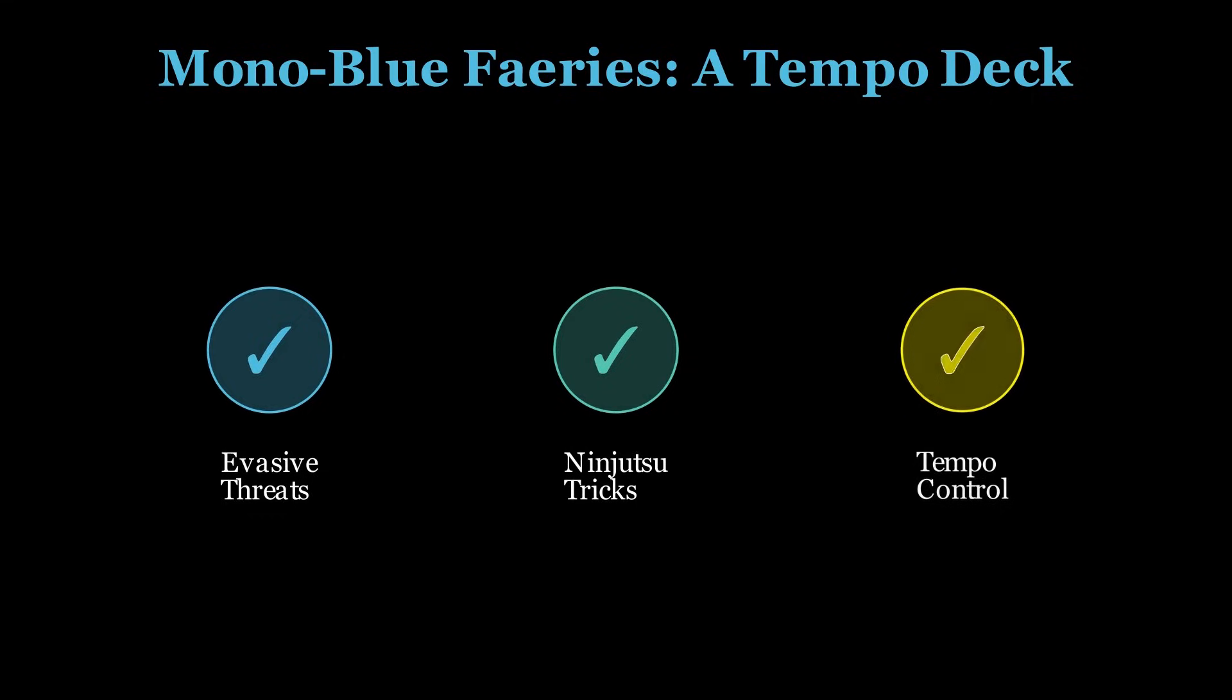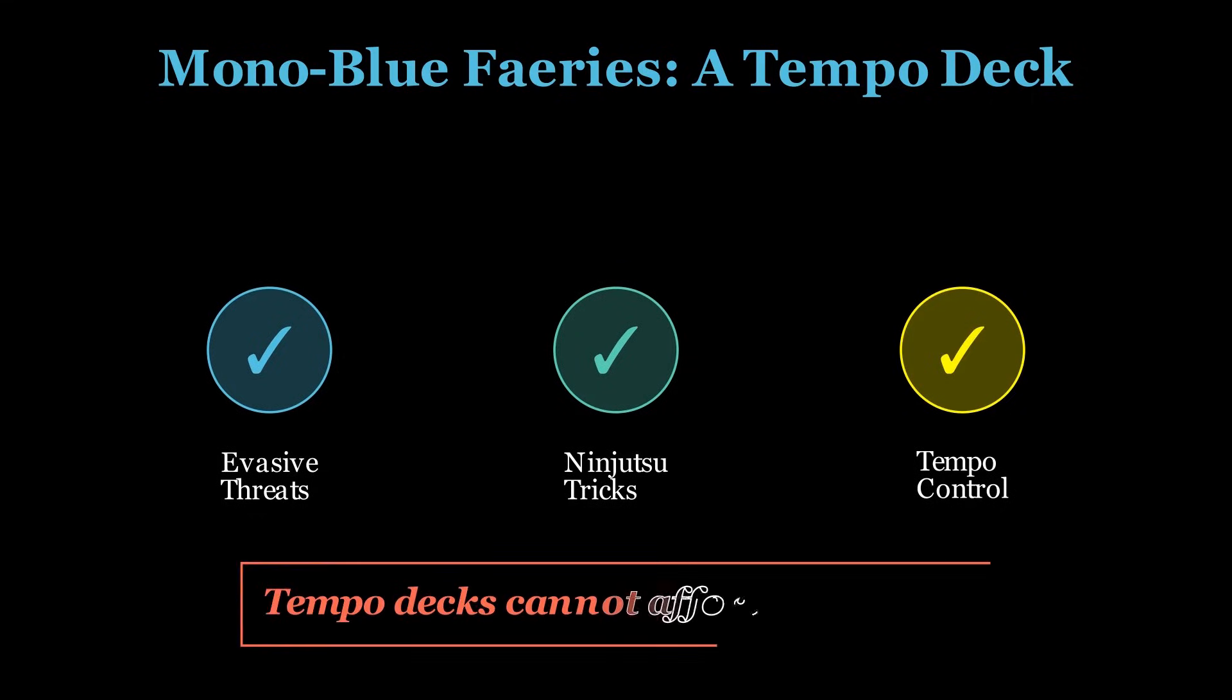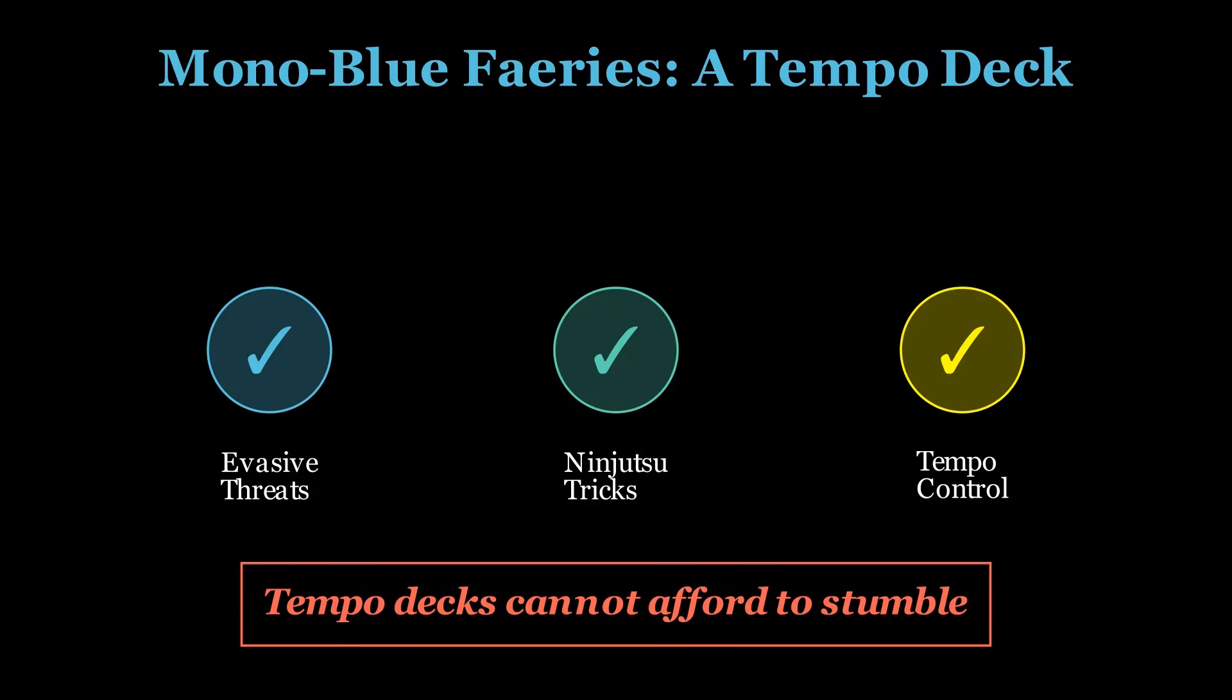Mono Blue Faeries is one of Pauper's most elegant tempo decks, evasive threats backed by ninjutsu tricks that generate card advantage while maintaining pressure. But unlike mid-range or control strategies that can recover from stumbles, tempo decks cannot afford to miss a beat. Missing that second land, or failing to deploy early threats, typically means falling too behind to recover.